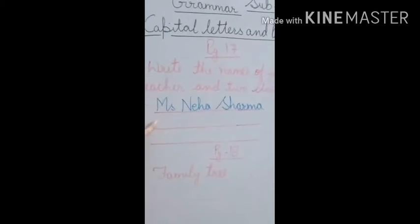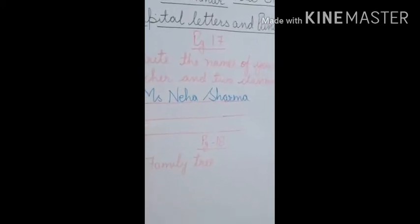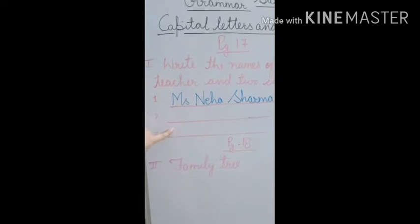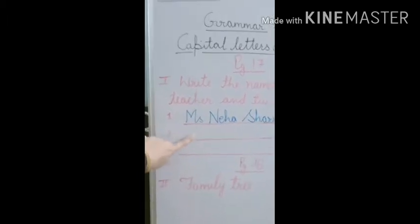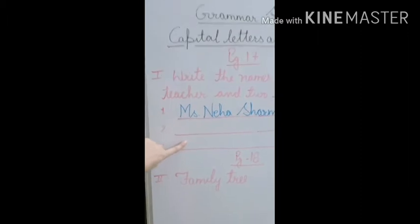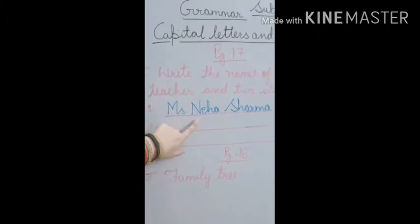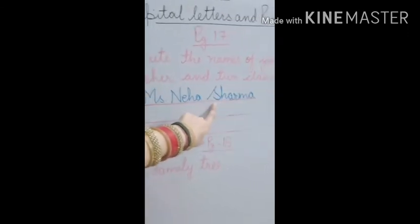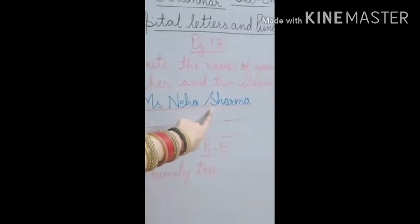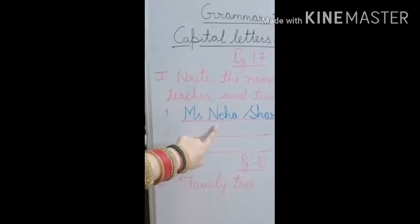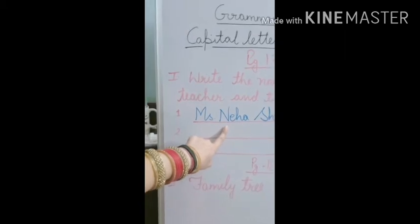Here you have to write two names of your classmates. You can write your friend's name, but you have to remember that a name always begins with a capital letter. Like you can see, I have written my name — N in Neha is capital and S in Sharma is capital. So the name always begins with a capital letter.